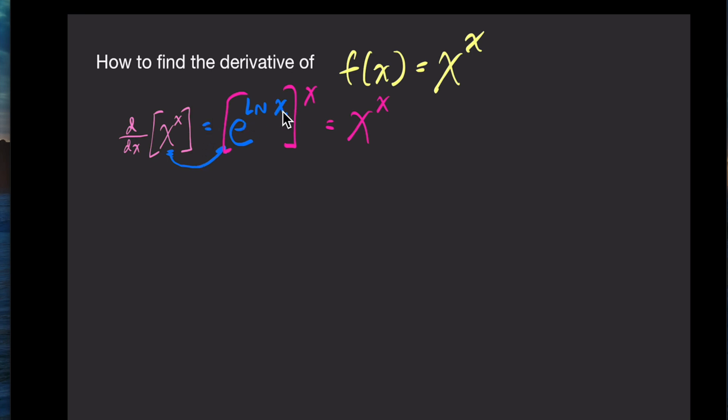So this is the same thing as saying x to the x power. Why does e to the ln of x equal x? Because recall, if these bases match, like so, these cross out and you are left with the argument. Okay, so now let's see where this takes us. Now we can use the power rule here for exponents, where if you have an exponent raised to an exponent, you can multiply these two. So this now becomes e to the x ln of x.